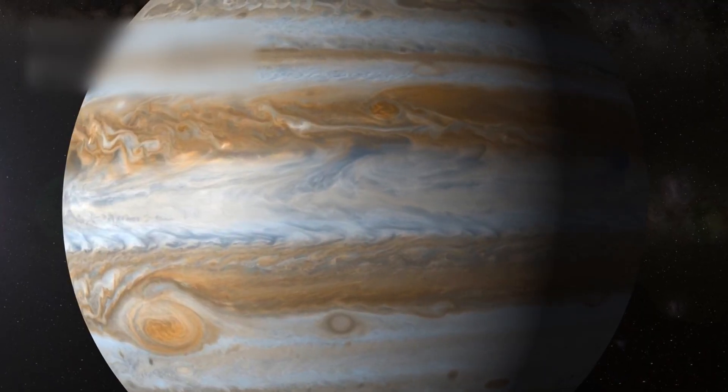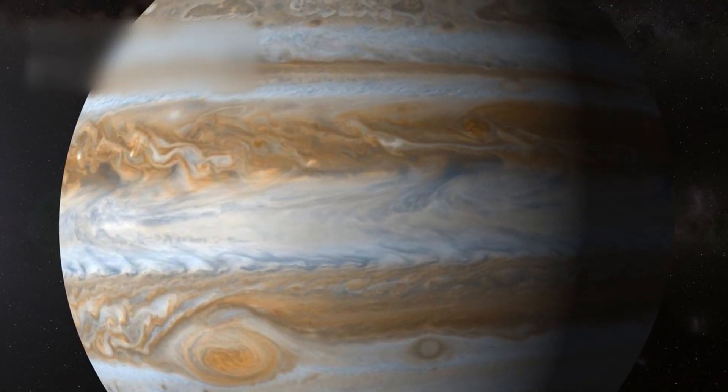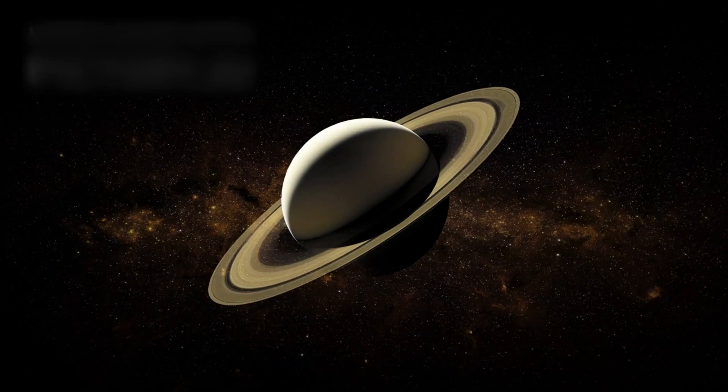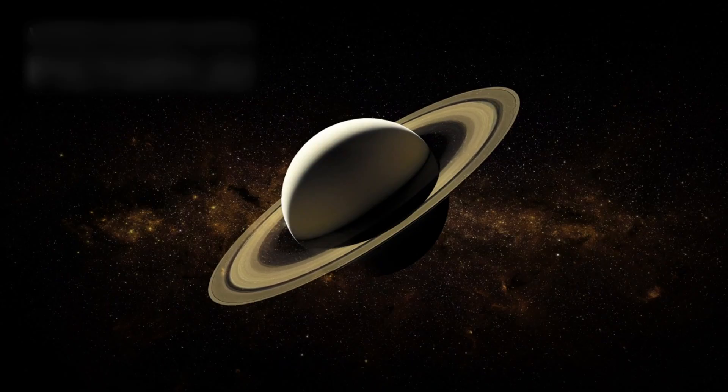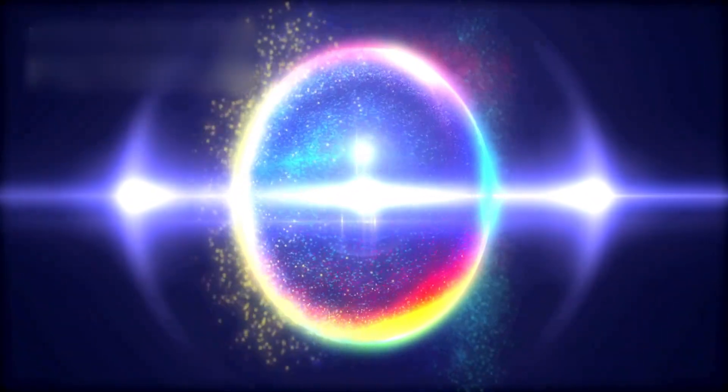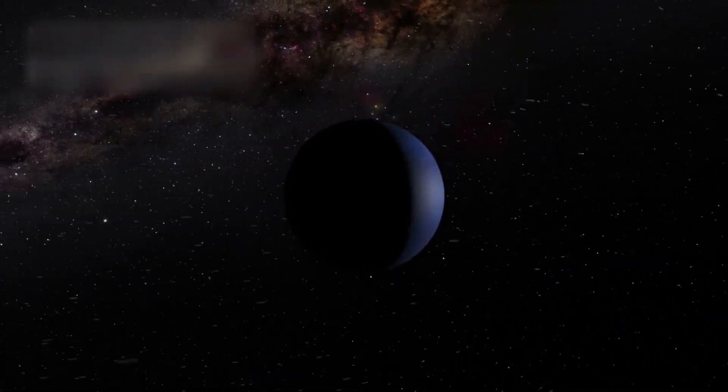Jupiter, a storm-wracked giant, its turbulent atmosphere roiling endlessly. Saturn, crowned with icy rings that glint in the distant sunlight. Uranus, tipped dramatically on its side, rolling in silent majesty. Neptune, glowing faintly under fast fierce winds, a pale blue wraith in the dark.